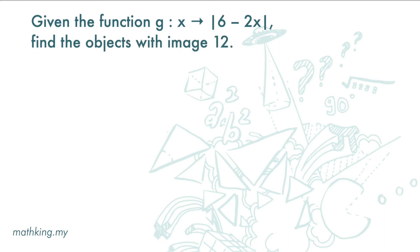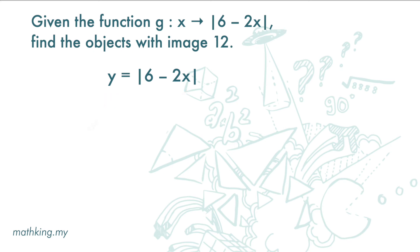Look at this question with function notation. Given that function g maps x to the absolute value of 6 minus 2x, find the objects with image 12. This is like having the equation y equals the absolute value of 6 minus 2x, where x is the object and y is the image. Here, y equals 12 and we are required to find the value of x. In function notation, we write g(x) equals the absolute value of 6 minus 2x.